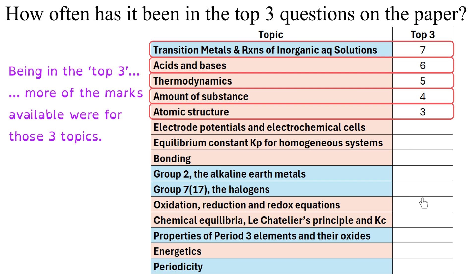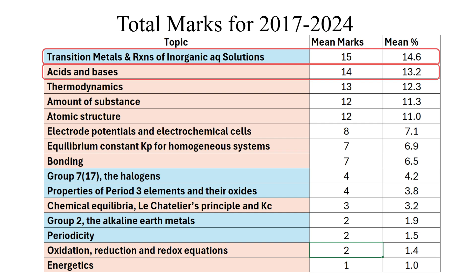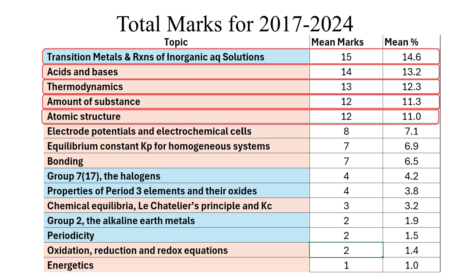Notably, those five topics are the only topics that have ever been in the top three for highest marks available. Looking at which topics carry the most marks on average across those eight years: transition metals and reactions of inorganic aqueous solutions is worth on average 14.6% of the marks for Paper 1. Acids and bases carries 13.2%, thermodynamics 12.3%, followed by amount of substance and atomic structure at about 11% each. Electrode potentials is 7.1%.